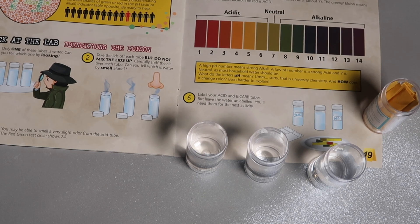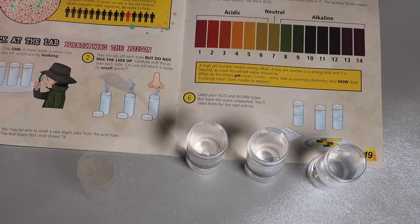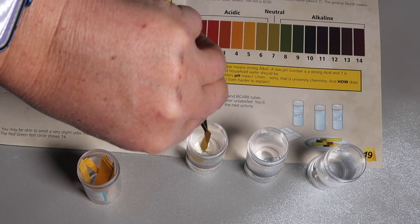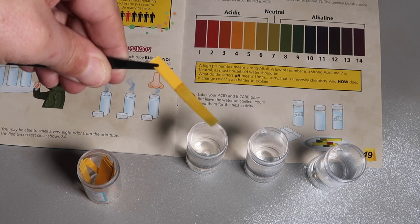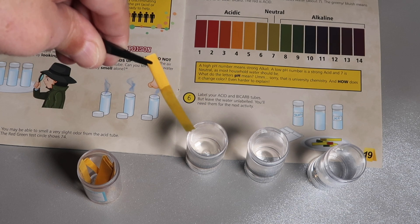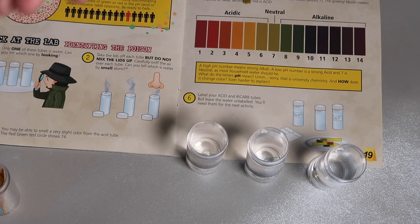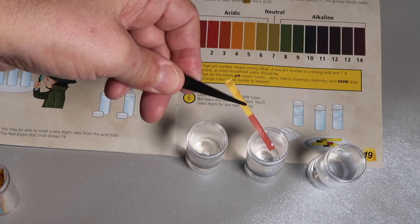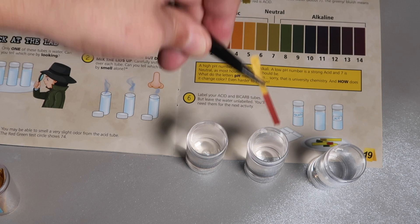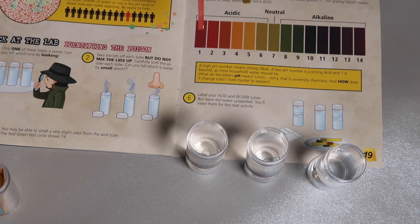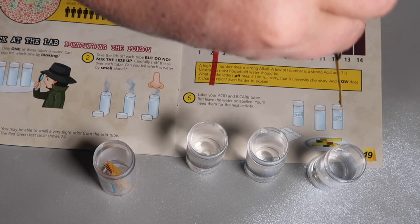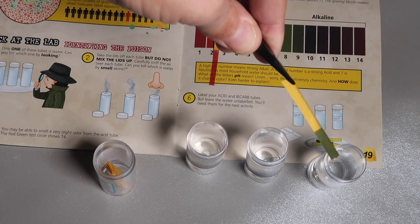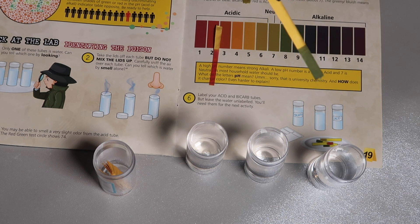So what we're going to do is take an indicator strip. And then we're going to compare the colour to this chart. Well, that looks like a definite acidic colour. And finally, that is very clearly alkaline.